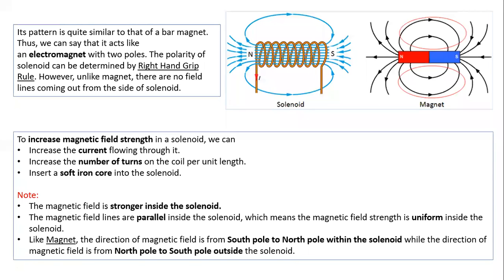When the current passes through the solenoid, a magnetic field is produced. To determine the north and south poles, look at the end of the solenoid. The end from which the current flows out will always become the north pole, and the other end will become the south pole. You can see the magnetic field coming from the north pole to the south pole. Inside the solenoid, the field lines are parallel.